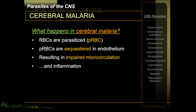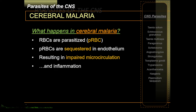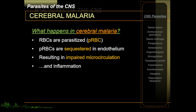In cerebral malaria, RBCs are parasitized or infected by Plasmodium falciparum. The parasitized red blood cells are sequestered in the endothelium — meaning they clump together in the endothelium, particularly the endothelium of the brain, which results in impaired microcirculation in the brain. Associated with it would be inflammation, and generally that is the pathogenesis of cerebral malaria.